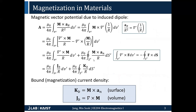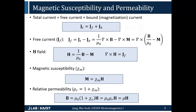We discussed that from the magnetization field, we can obtain the volume bound current density by taking the curl of it, or the surface bound current density by taking the cross product with the normal vector. And just as we did in electrostatics, we can write the total current as a function of free current and bound current. The total current is associated with the B field, the free current is associated with the H field, and the bound current is associated with the magnetization field.